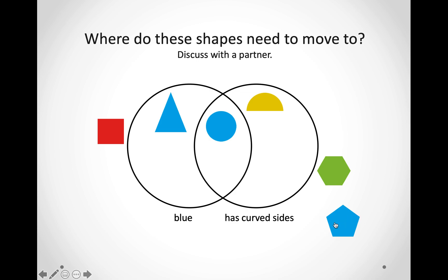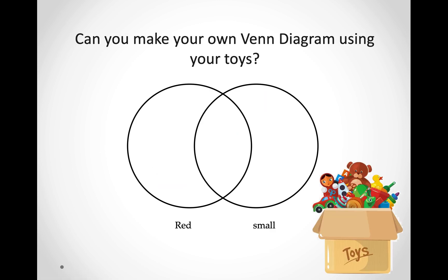Let us look at the last one. Is it blue? Yes, it is. Does it have any curved sides? No, it does not. So, we are going to put it in the circle that says blue only. Now, you can make your own Venn diagram using your toys. You can group all of the toys that are red in one circle and all of them that are small in another circle, and then put both the toys that are red and small in the middle.